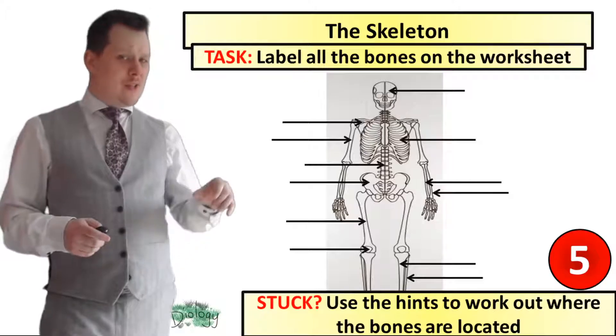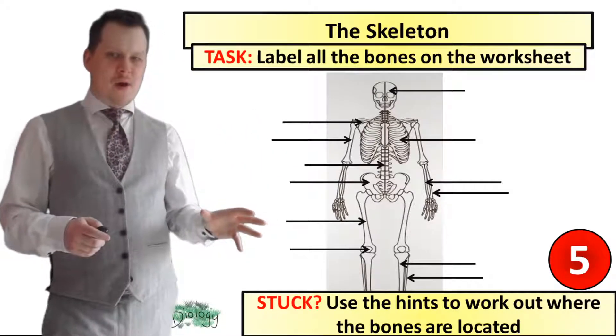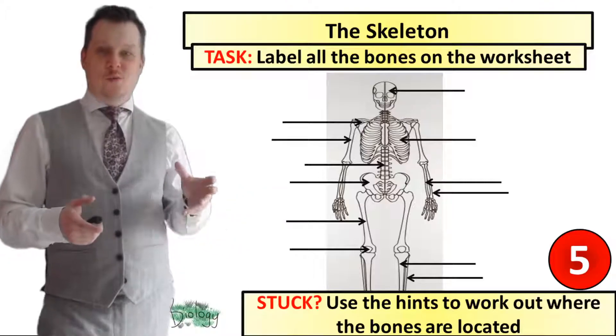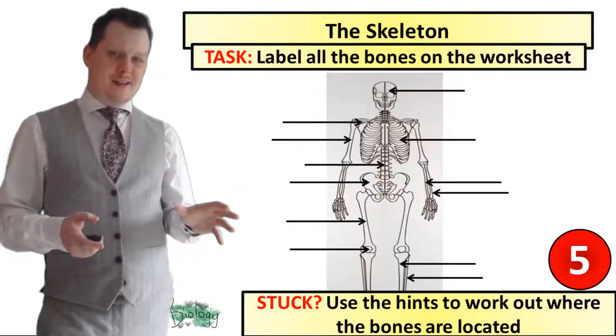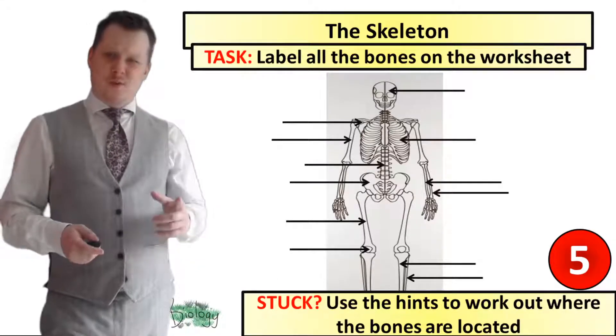For our next task what I'd like us to do is label all the bones of the skeleton on the worksheet. If you're unsure about any of the bones then use the hints on the worksheet to work out where the bones are located. I've got five seconds on the clock. Pause your video and when you're finished we'll go through it together.